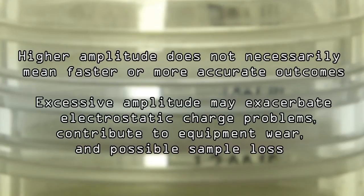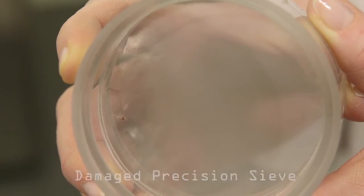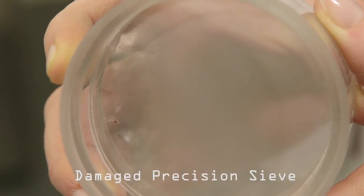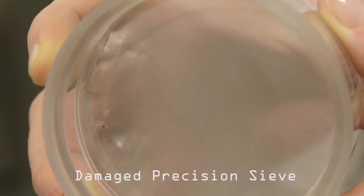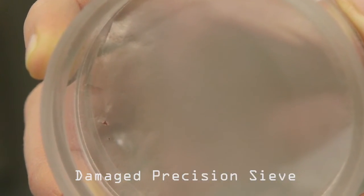It is important to note that higher amplitude does not necessarily mean faster or more accurate outcomes. Excessive amplitude may exacerbate electrostatic charge problems, contribute to equipment wear and possible sample loss. Precision sieves are especially prone to premature or immediate failure if run with excessive sample size, excessive amplitude, or if on an extended test cycle.